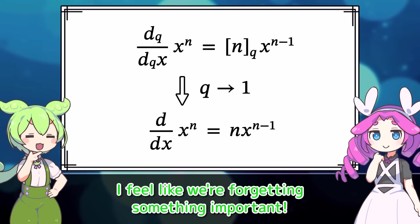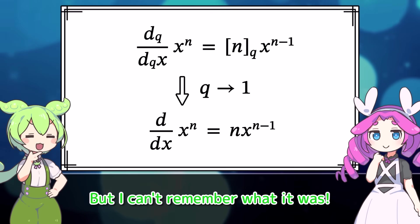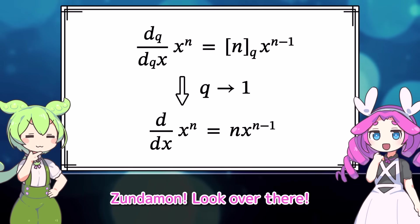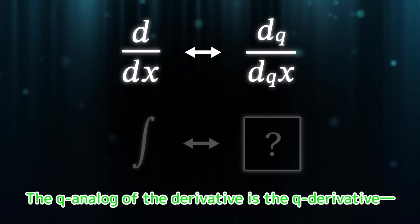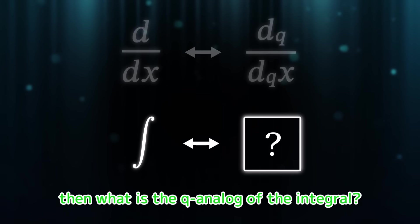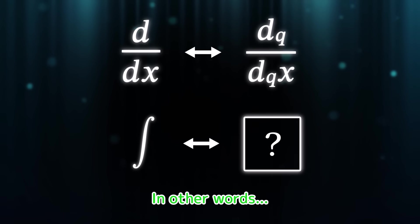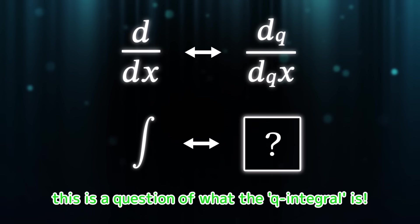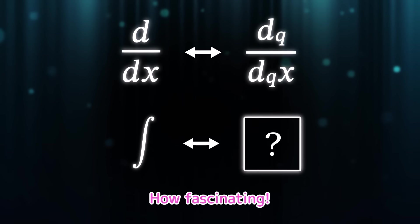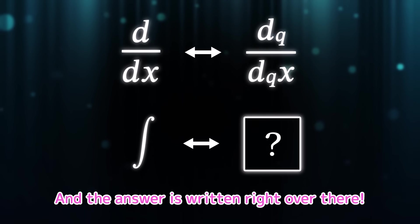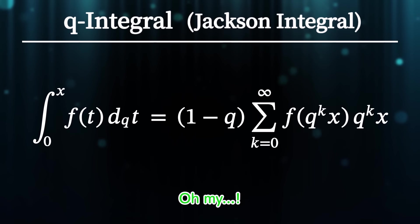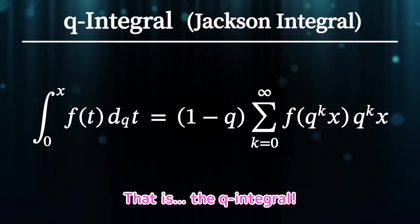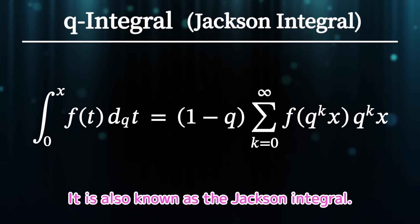What's wrong? I feel like we're forgetting something important. But I can't remember what it was. Santiman, look over there! What?! Oh my! The q-analog of the derivative is the q-derivative. Then what is the q-analog of the integral? In other words, this is a question of what the q-integral is. How fascinating! And the answer is written right over there! What?! Oh my! That is the q-integral. It is also known as the Jackson integral.